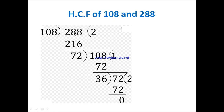Likewise, let's find the HCF of 108 and 288. We take the greater number 288 as dividend. In 288, how many times does 108 go? Two times — 2 times 108 is 216. We subtract and get remainder 72. Now 108 becomes the dividend: in 108, how many times does 72 go? One time — we subtract and get remainder 36.